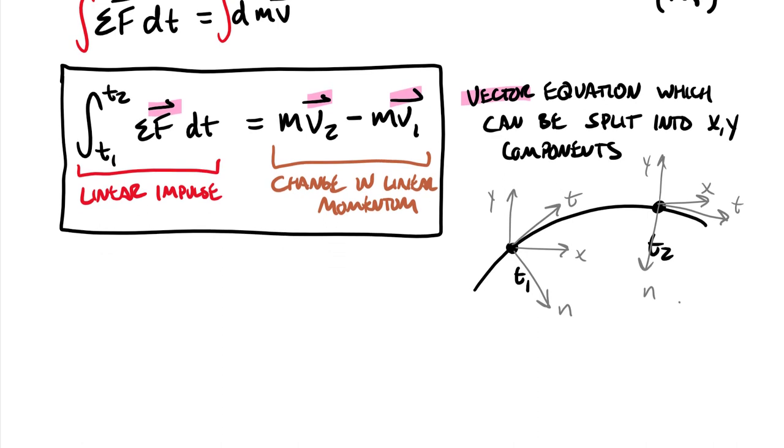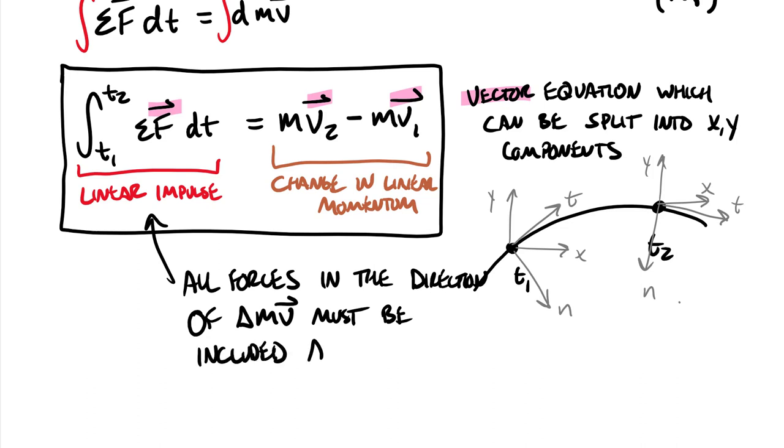The other point that I wanted to make is that you remember in work and energy, we had a split of some forces showing up in our energy terms, which is our weight force and our spring force, and some terms showing up in the work terms. Here in impulse and momentum, we'll note that all forces in the direction of the delta mv, the change in the linear momentum, must be included as impulse.